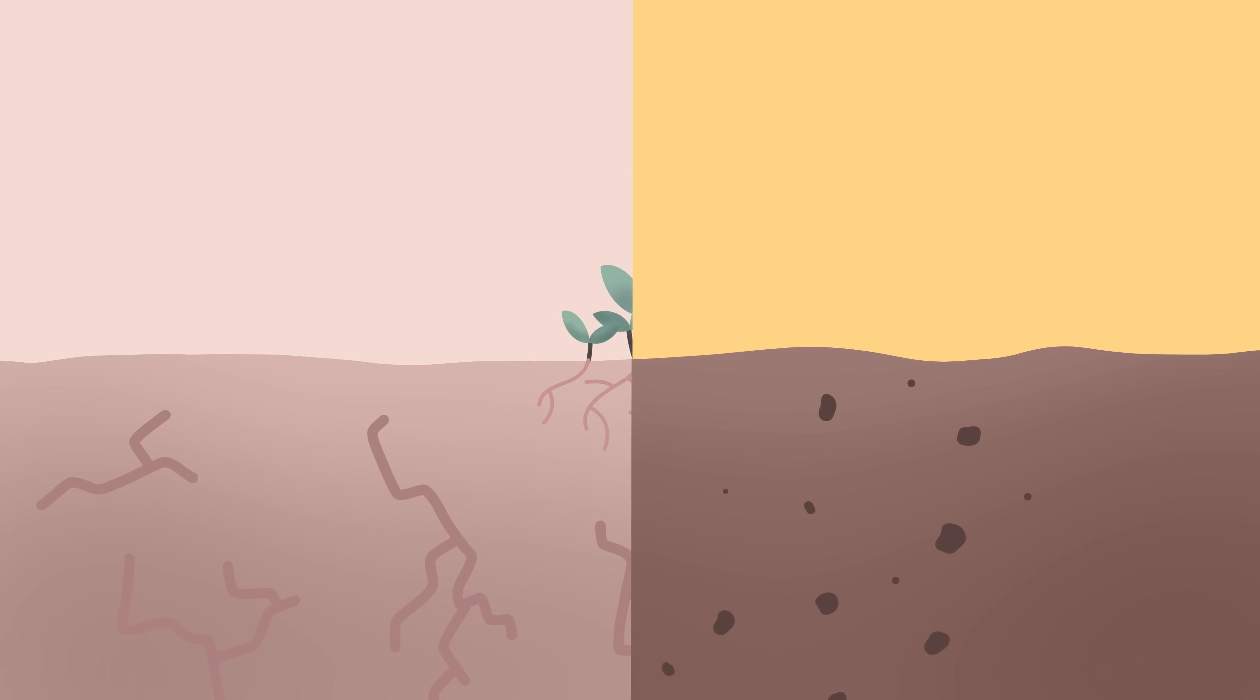By improving soil quality and exploiting natural interactions between plants, animals, and their environment, farmers can improve crop yields whilst reducing waste and resource use.